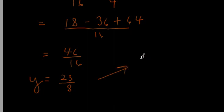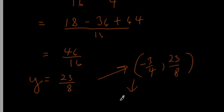So if we take our x coordinate, which was -3/4, and then 23/8, this is our vertex.